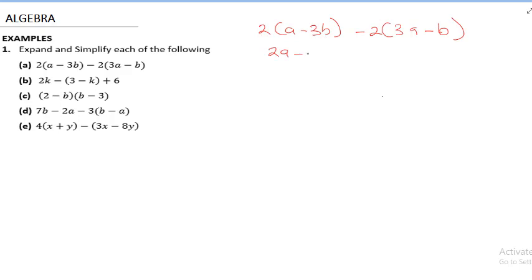Then 2 times 3b gives us 6b, so we have minus 6b. Now minus 2 times 3a gives us minus 6a. And minus 2 times minus b gives plus 2b, because minus times minus gives a plus. From here we collect like terms: 2a minus 6a comes forward.